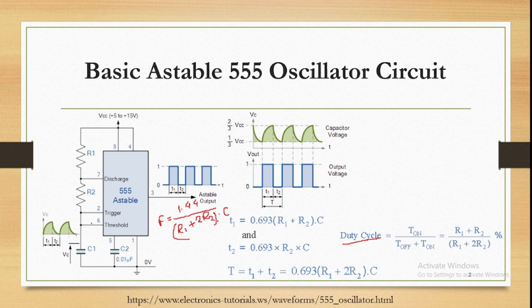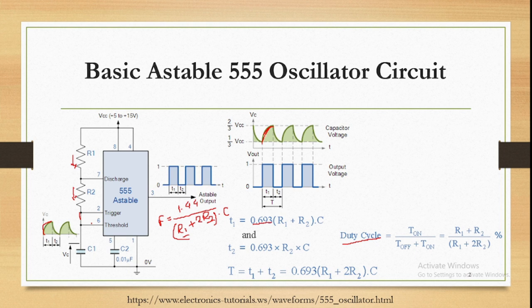The charging time of the capacitor depends upon R1 and R2. It is given as T1 equals 0.693 × (R1 + R2) × C. The capacitor charges with R1 and R2, giving a rise in voltage. You can see from the diagram it charges from one-third Vcc to two-thirds Vcc, depending upon the internal comparator structure.